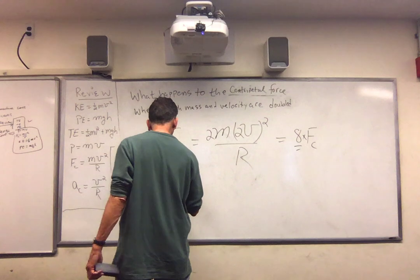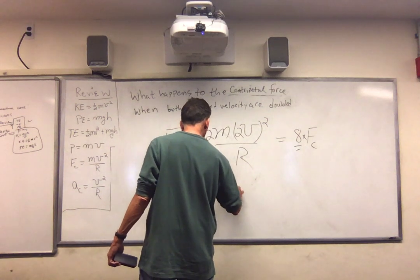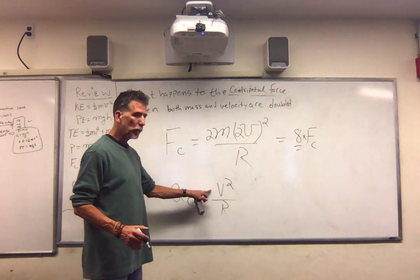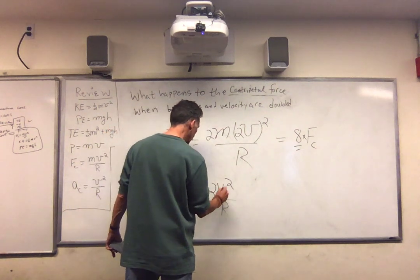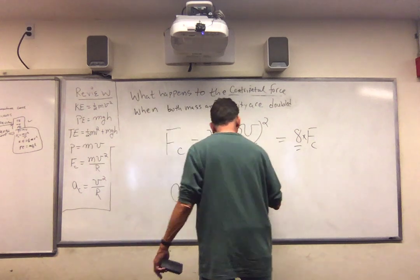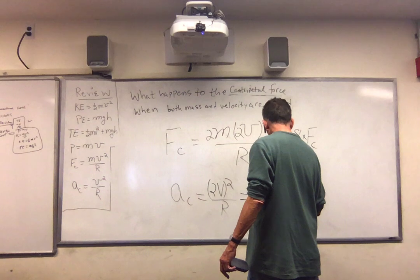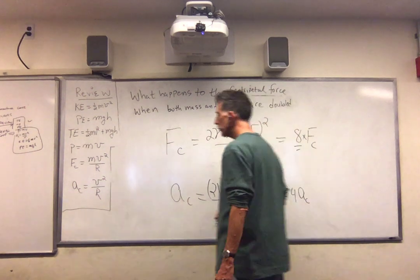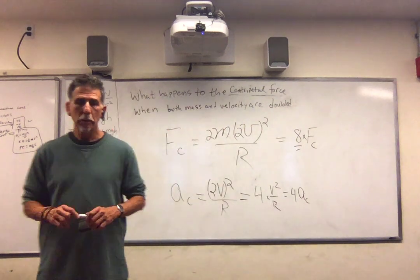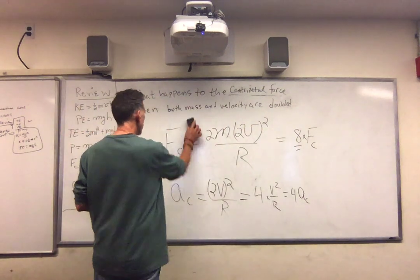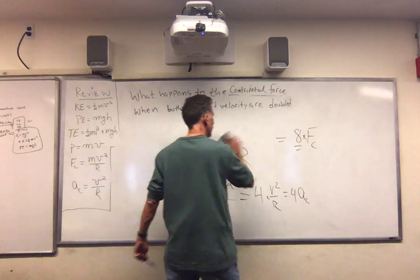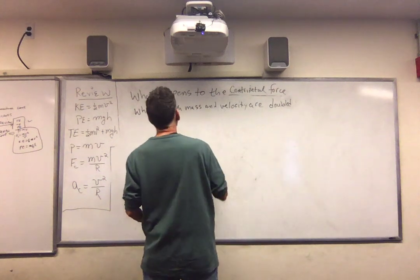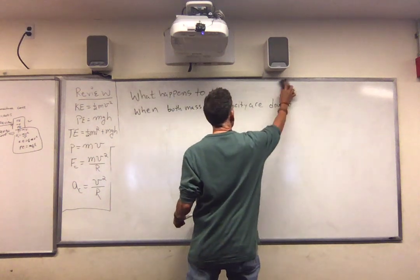What about the centripetal acceleration? A sub c is simply v squared over r. V squared over r. We're doubling the speed. So two squared just becomes four v squared over r, which is four a sub c. Let's keep going. Let's review this. Do it again.